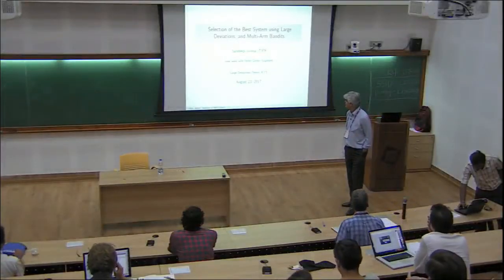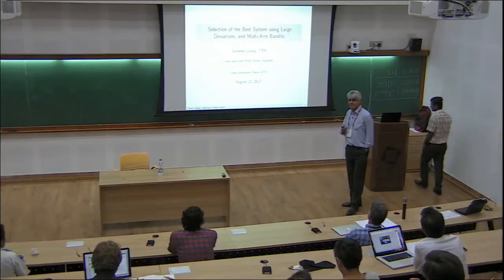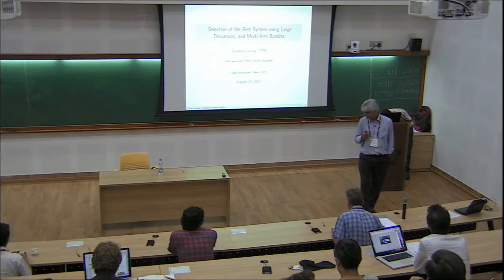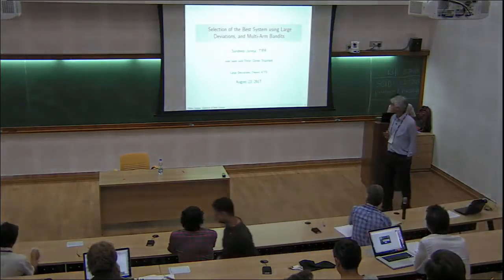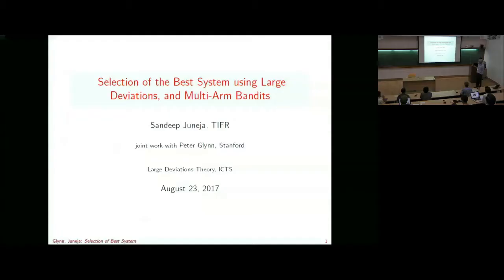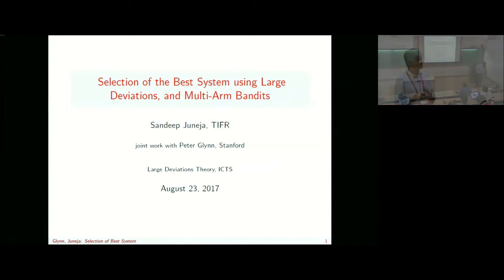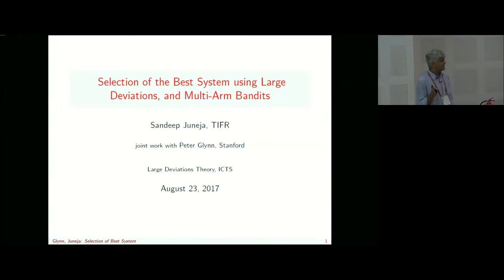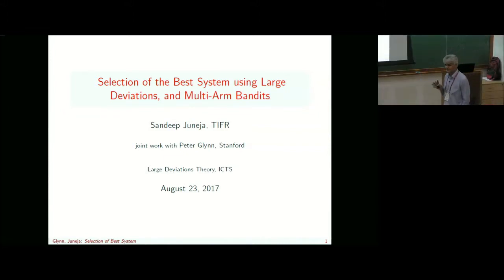This is work done a few years ago jointly with Peter Glynn. We've done more work since then and now it's time to revisit it. The topic is selection of the best system using large deviations and multi-armed bandits. We have a population we can sample from; we don't know the expectations and we want to find the population with the best mean. From a large deviations point of view, we actually have a negative result. I'll walk you through a seemingly positive theory, tell you the negative result, and then discuss some positive results using ideas from multi-armed bandit literature.